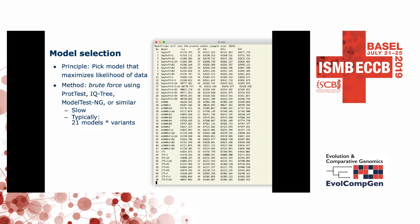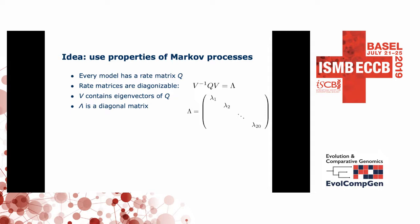I wanted to find a shortcut to do this much faster. I was thinking we should be able to use the properties of the Markov processes underlying all these sequence evolution models. These Markov processes build on a rate matrix Q. This rate matrix has nice properties — you can diagonalize these matrices. All you need is the matrix V applied to Q, giving a diagonal matrix with the eigenvalues of Q on the diagonal. The matrix V is found by computing the eigenvectors of Q.